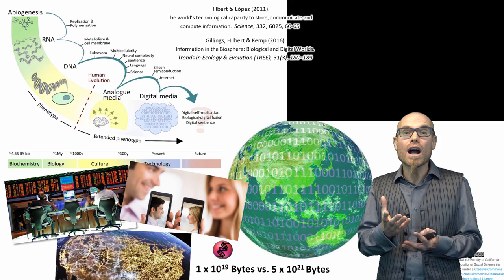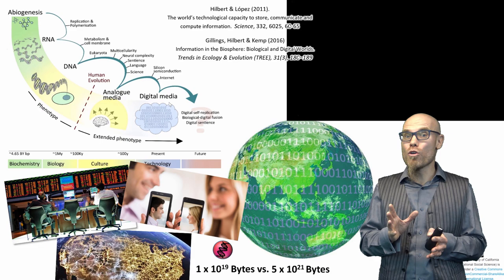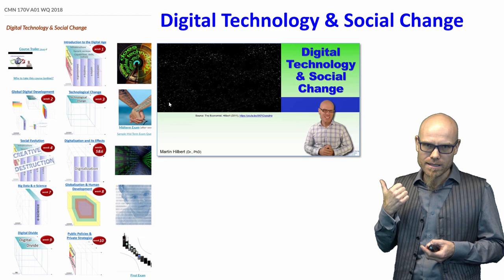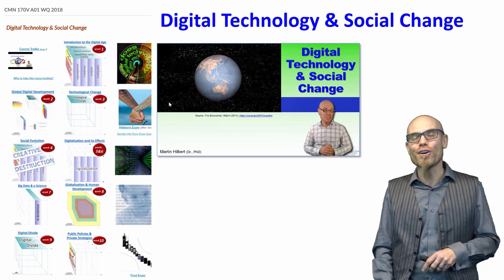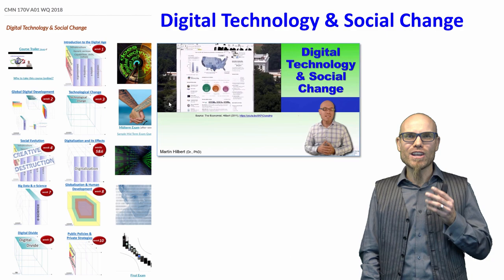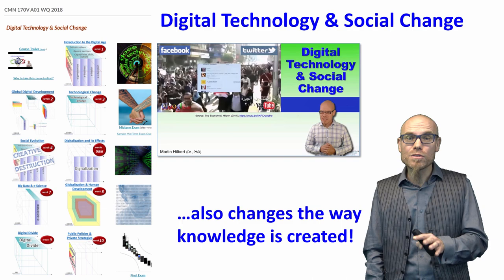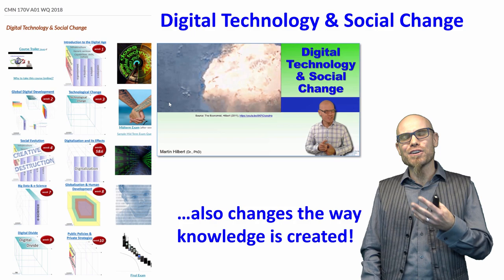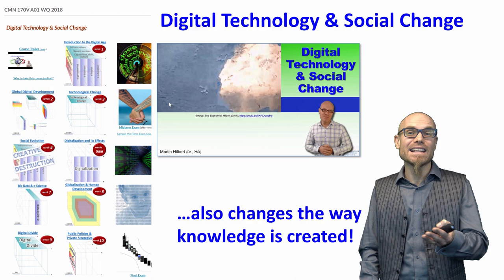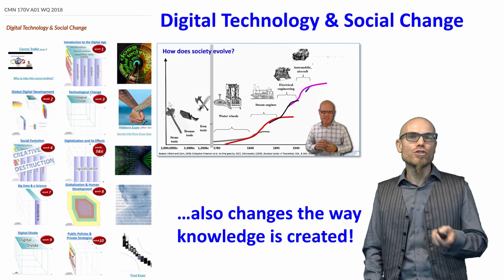I won't bore you now about how the digital revolution changed society, because there's another course of mine — 'Digital Technology and Social Change' — that covers ten sessions on how digital technology changes health, education, entertainment, political revolutions, and so forth. But it also changes the way knowledge is created. That's my job as a researcher here at the University of California: we create knowledge. As our motto says, 'Let there be light' — we shed light on unknown things — and digital technology helps us do that.